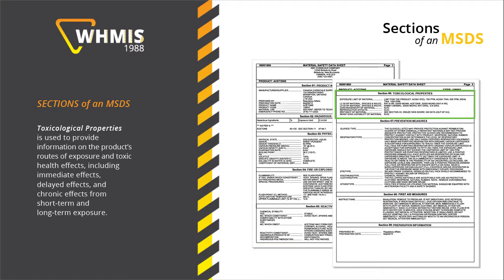The Toxicological Properties section is used to provide information on the product's routes of exposure and toxic health effects, including immediate effects, delayed effects, and chronic effects from short-term and long-term exposure.